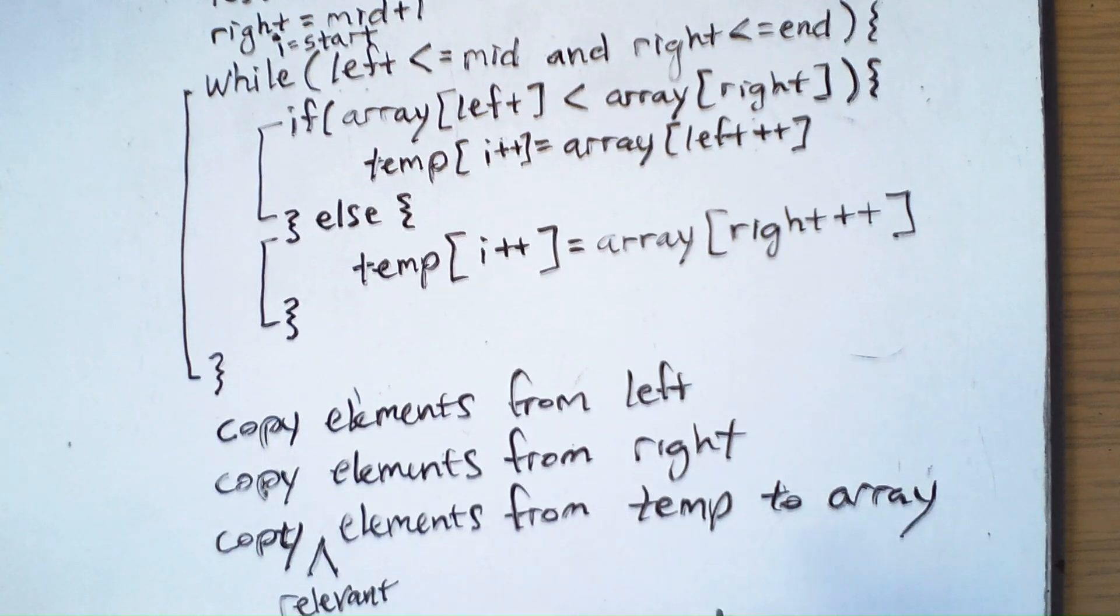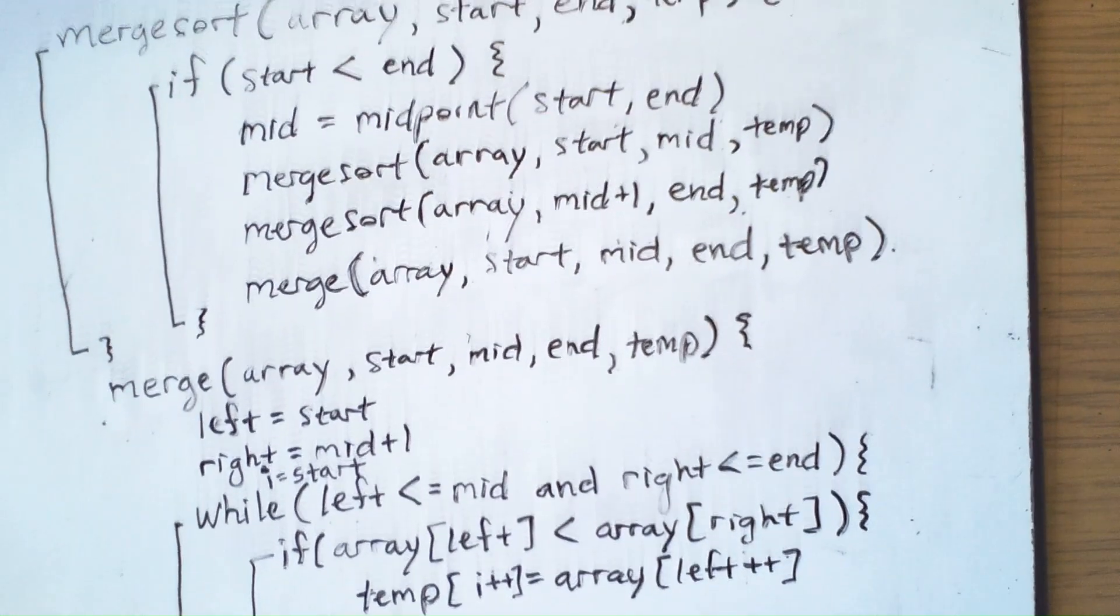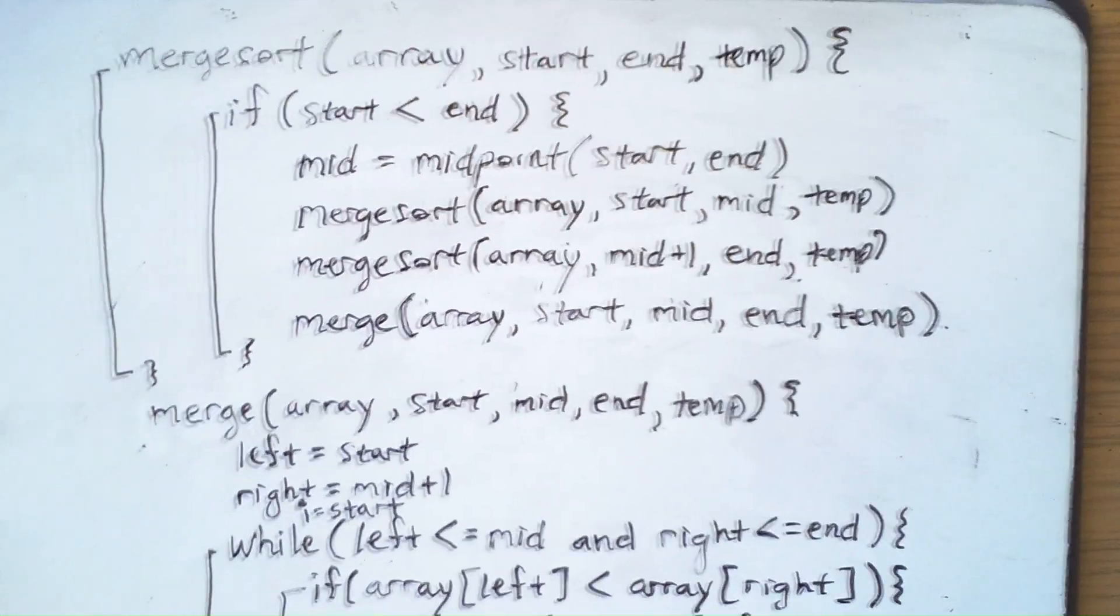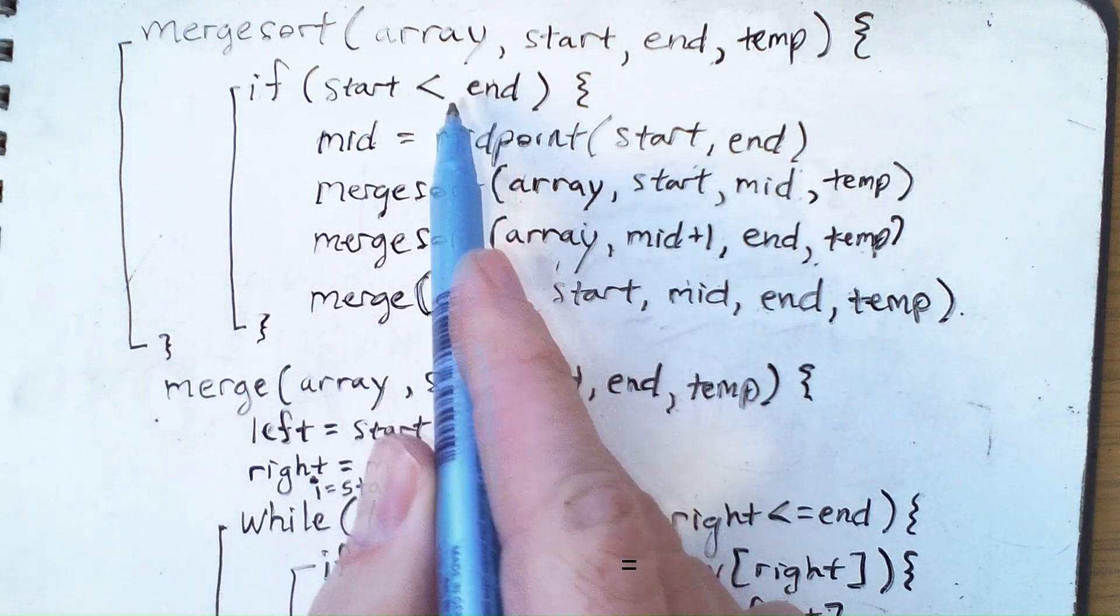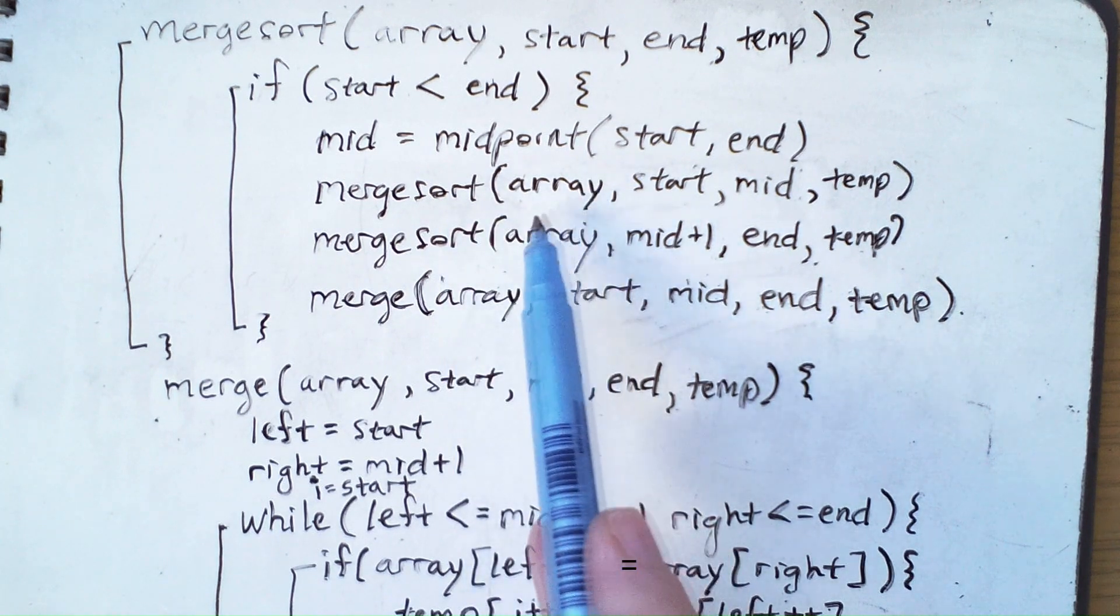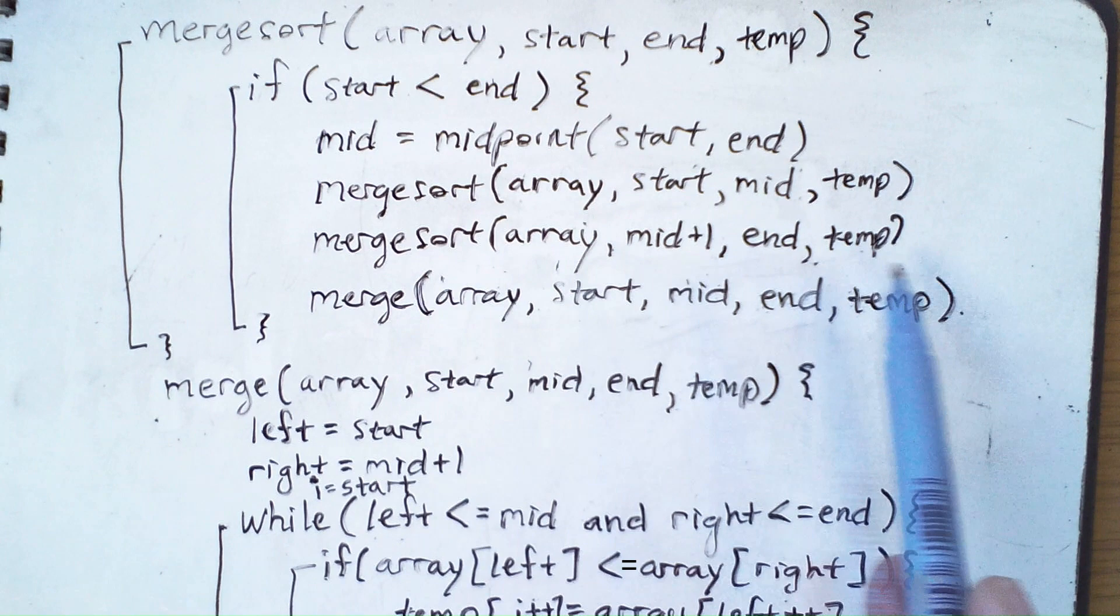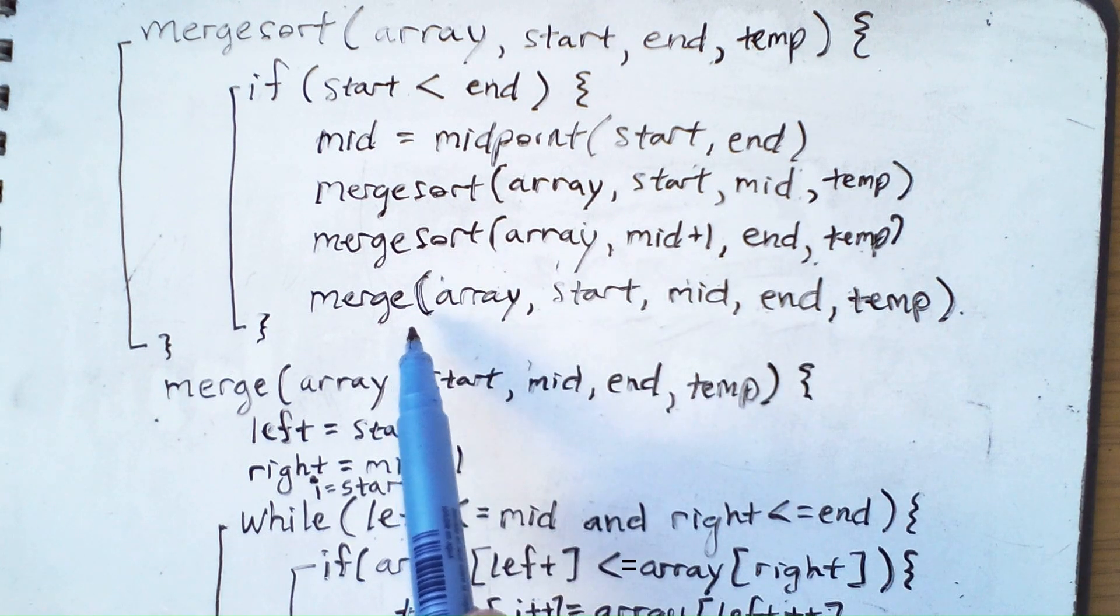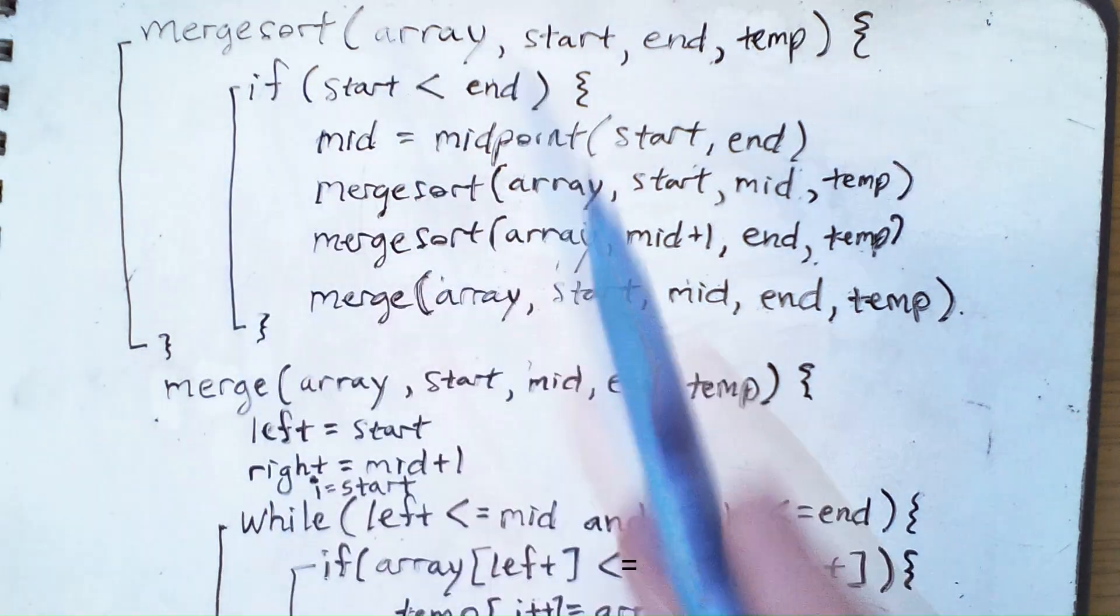That is the complicated aspect of merge sort. But the elegant side of merge sort is right here, where we have this nice recursive algorithm that calculates a midpoint. It merge sorts the left half of the array, merge sorts the right half of the array, and then merges the two sorted halves. And so this is the core.